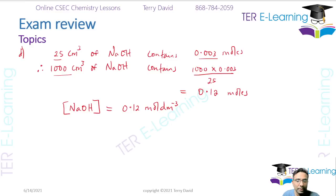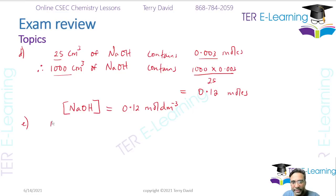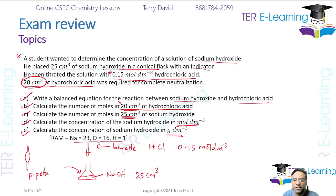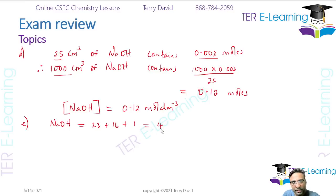The last part: calculate the concentration of the sodium hydroxide in g per dm³. They want you to convert from mol per dm³ to g per dm³. All you need to do is find the molar mass of sodium hydroxide. Given that sodium is 23, oxygen is 16, and hydrogen is 1, the molar mass is 23 + 16 + 1 = 40 g/mol.